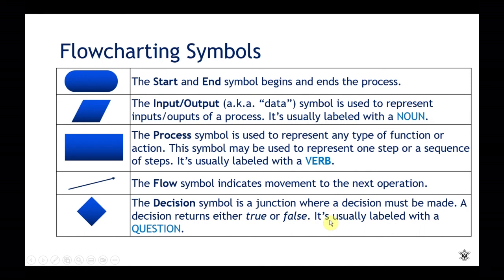The flow symbol indicates movement to the next operation. The decision symbol is a junction where a decision must be made. I usually call this the decision diamond. D is for decision. D is for diamond. The decision returns either true or false. It's usually labeled with a question.